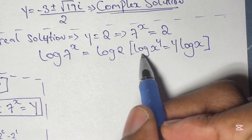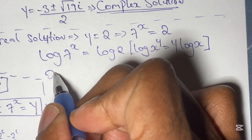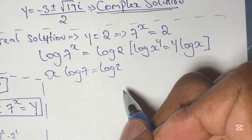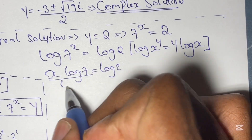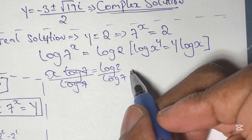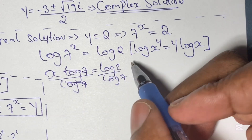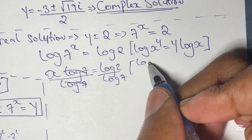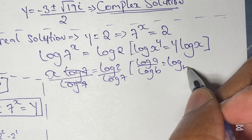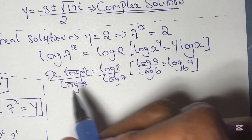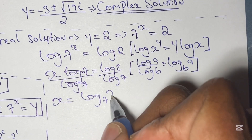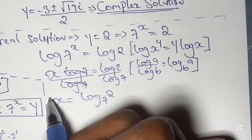Applying the rule gives us x times log 7 equals log 2. Dividing both sides by log 7, we get x equals log 2 over log 7. Using the change of base rule, log a over log b equals log base b of a, we simplify to get x equals log base 7 of 2. This is our solution for x.